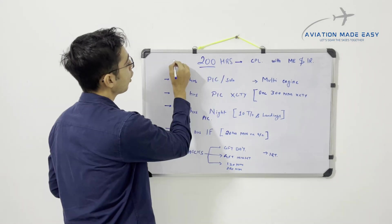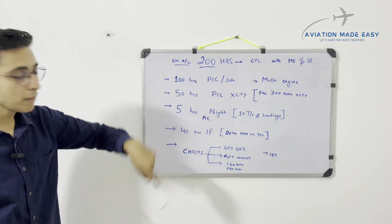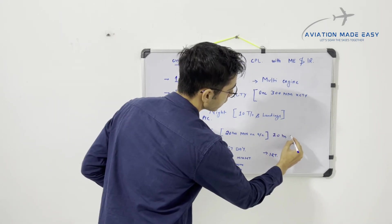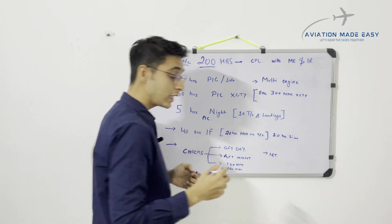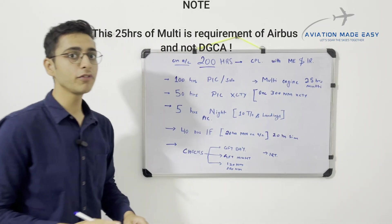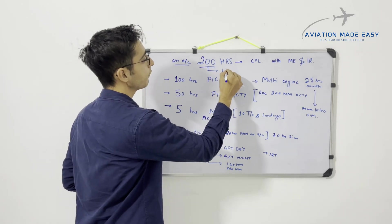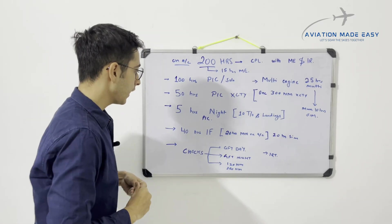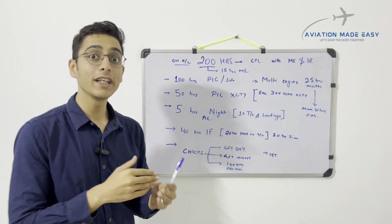The 200 hours must be on the aircraft — simulator time is not counted within those 200 aircraft hours. We prefer 20 hours on simulator because if you're going for a multi-engine rating, you need 25 hours on multi-engine aircraft, of which maximum 10 hours can be on a simulator. So out of 200 hours, 15 hours are dedicated to multi-engine on aircraft, and multi-engine operations are always dual.